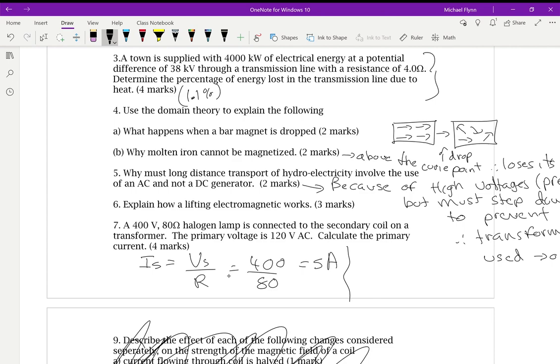The primary current, it'll be Ip over Is equals Vs over Vp. So, just solving for Ip you're going to get 400, we're doing that right? Yeah, I'm doing that right. So, it's going to be 400 divided by 120, and then I'm going to multiply that times 5. I get 16.7 amps. There you go. That's your answer.